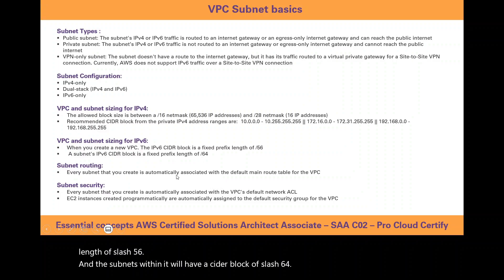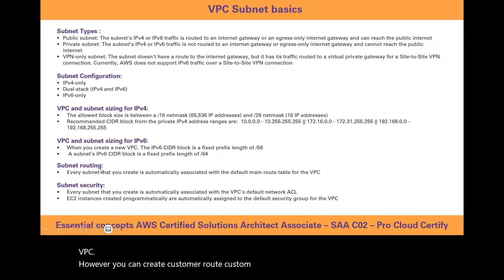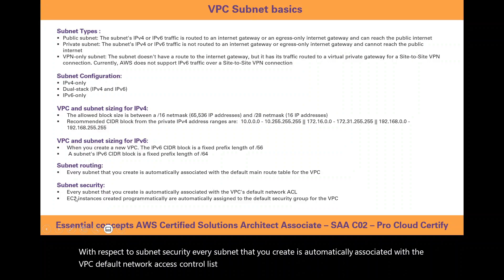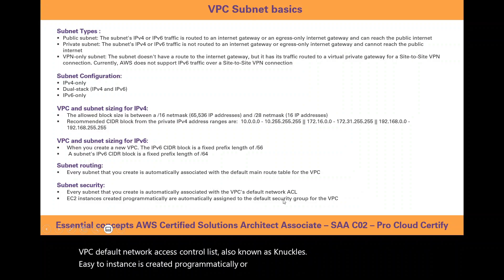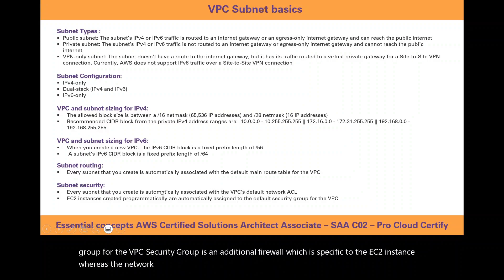Every subnet that you create is automatically associated with the default main route table for the VPC; however, you can create custom route tables for a subnet. With respect to subnet security, every subnet is automatically associated with the VPC's default network access control list, also known as NACLs. EC2 instances created programmatically are automatically assigned to the default security group for the VPC. Security groups are an additional firewall specific to the EC2 instance, whereas the network access control list is a firewall for your subnets.